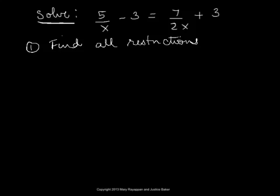So let us look at the equation. The denominators in the given equation are x and 2x. Look at the numbers, negative 3 and positive 3.